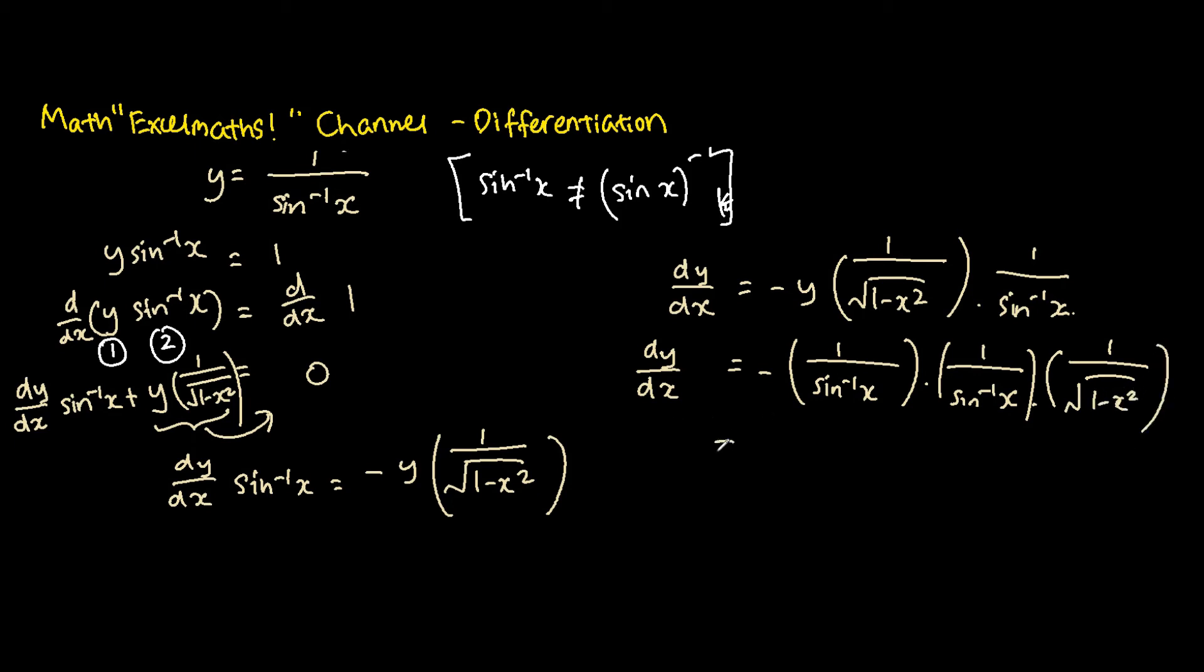And last but not least, the last part we're going to do is that we will basically multiply this together because they are the same. So it's just basically negative 1 over the sine inverse x squared.